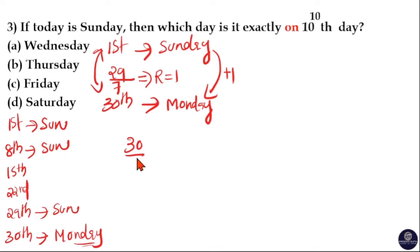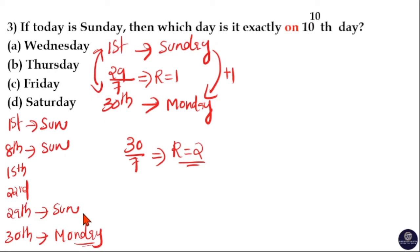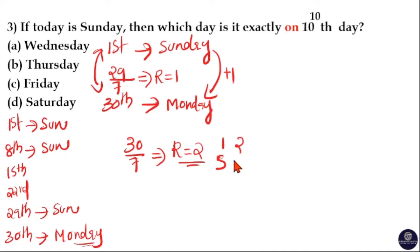You can also use the direct method: 30 divided by 7 gives a remainder of 2. In this method, the first day Sunday is already included in the 30 days, so the remainder is 2. Remainder 2 means there are 2 odd days. The 1st odd day is Sunday, and the 2nd odd day is Monday. So the 30th day is Monday. You can calculate either way, but you need to understand the concept.